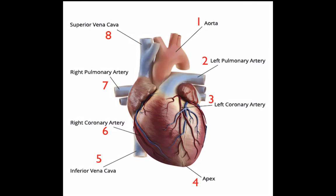Structure number one is the aorta. Structure number two is the left pulmonary artery. Structure number three is the left coronary artery. Structure number four is the apex. Structure number five is the inferior vena cava. Structure number six is the right coronary artery. Structure number seven is the right pulmonary artery. Structure number eight is the superior vena cava.